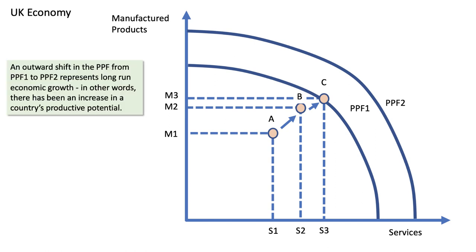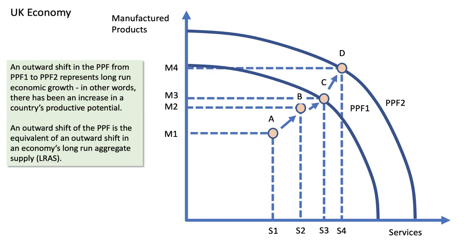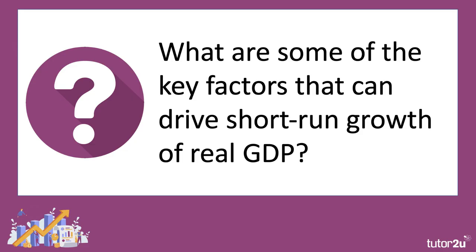That represents long-run economic growth — in other words, there's been an increase and expansion of an economy's productive potential. That allows us, for example, to reach up from C to D. This shift is equivalent to an increase in a country's long-run aggregate supply.